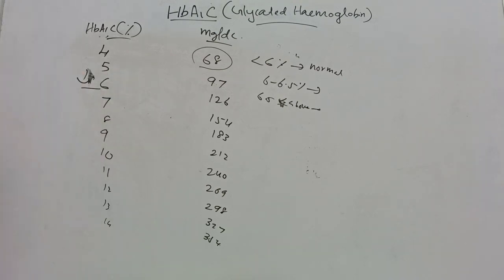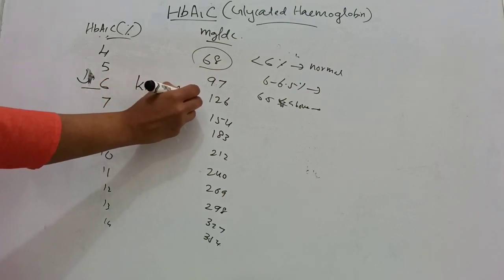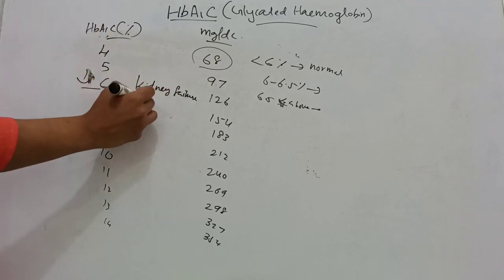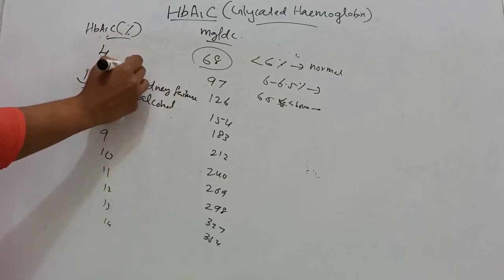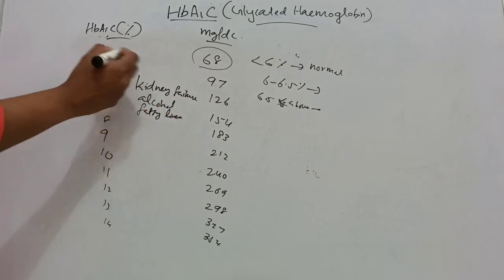Several factors can falsely increase or decrease HbA1c result. Falsely increased HbA1c is seen in patients with kidney failure, excess intake of alcohol, and iron deficiency.